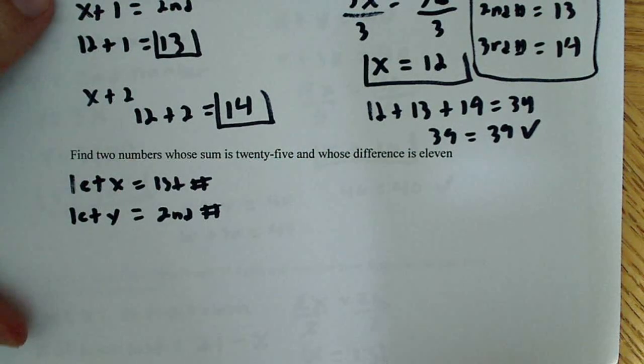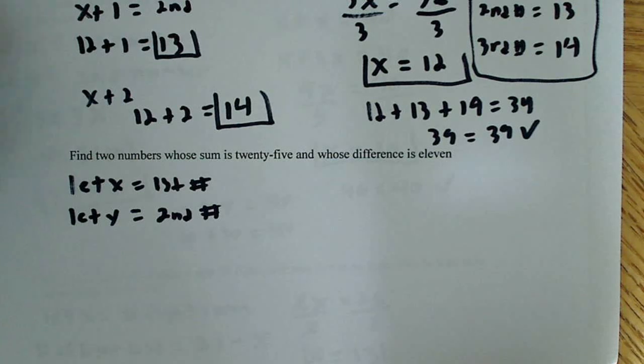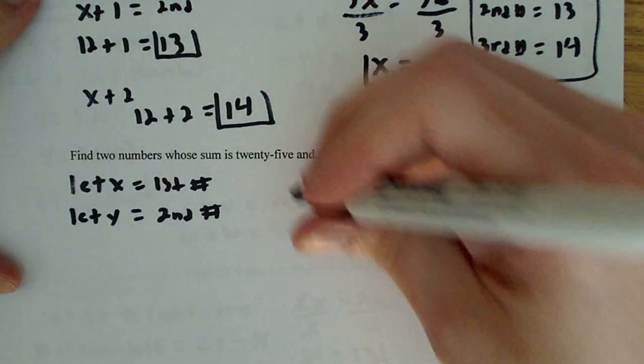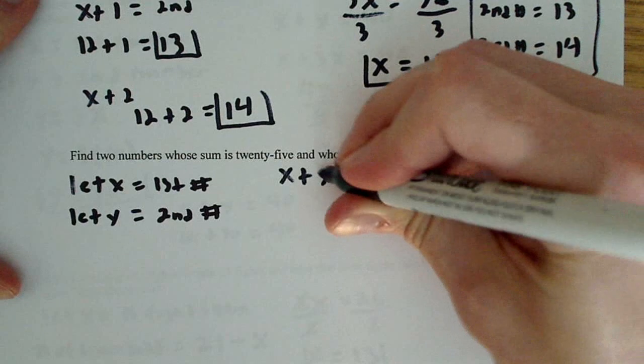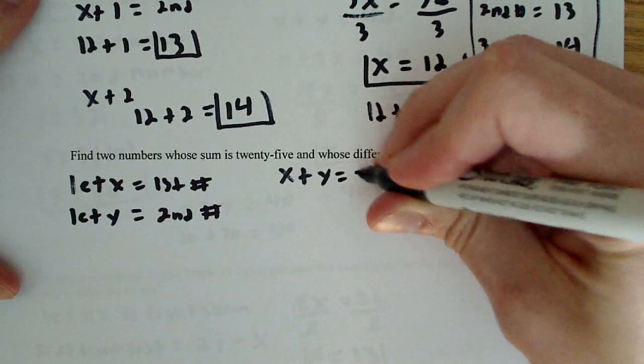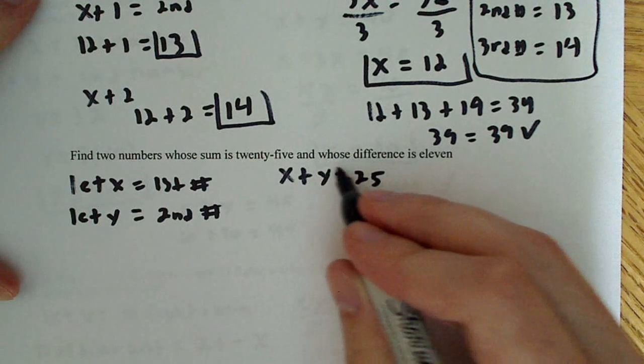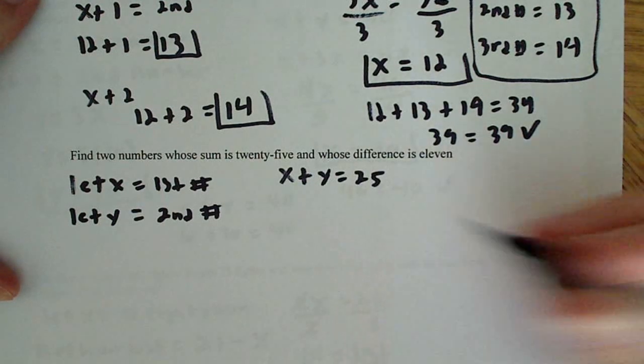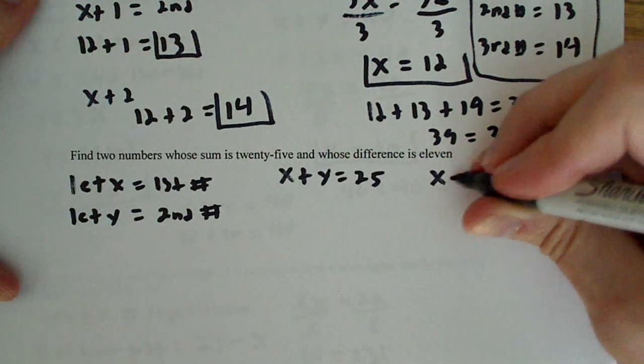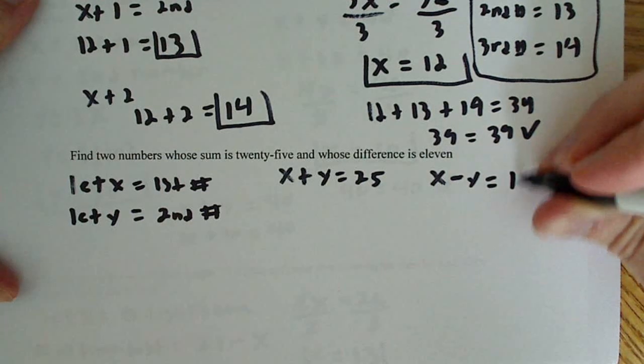Now it also says that the sum is 25. So that says to me x plus y, the sum is equal to 25. And then it says also over here that the difference is 11. So I would say x minus y is equal to 11.